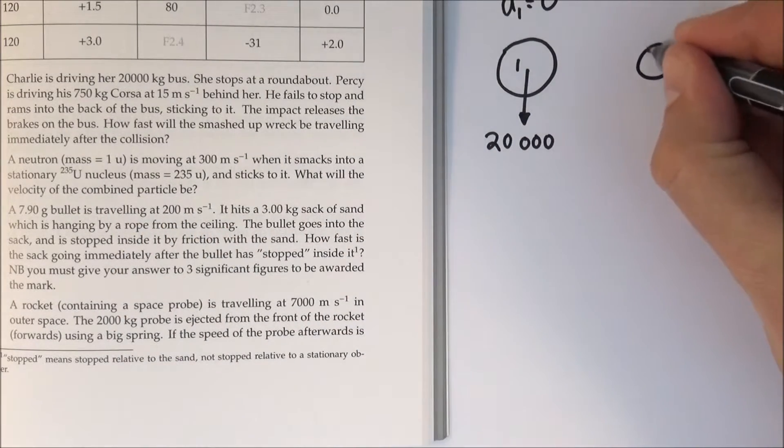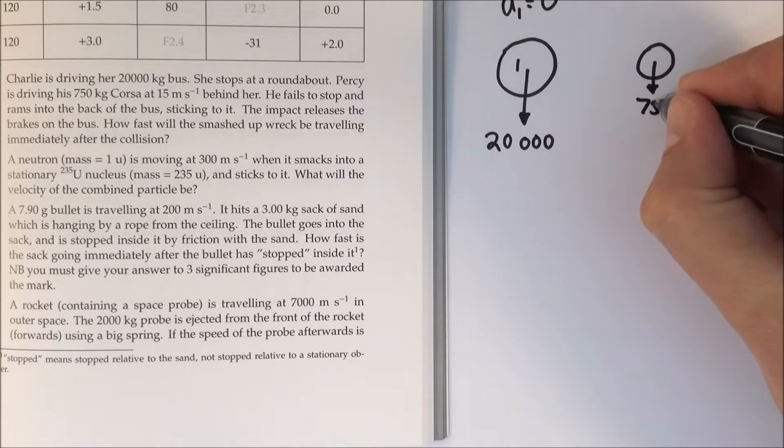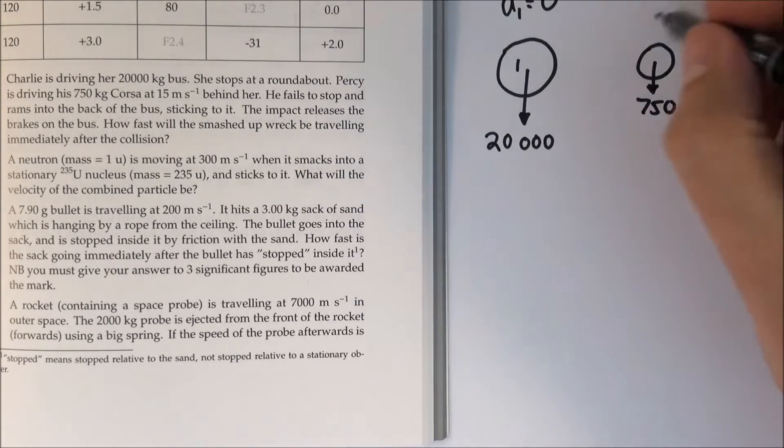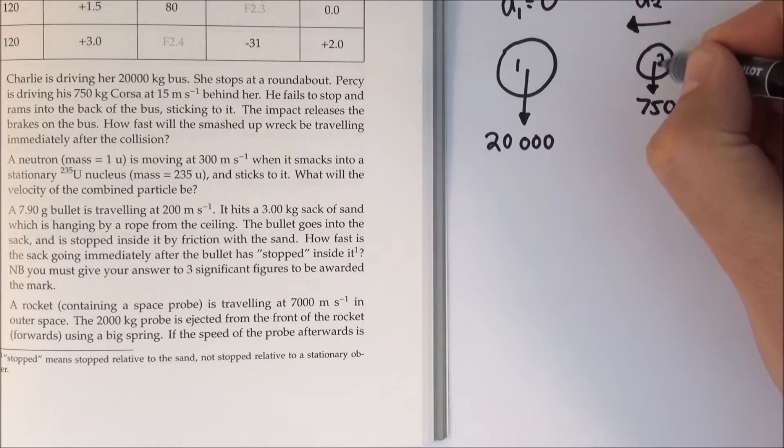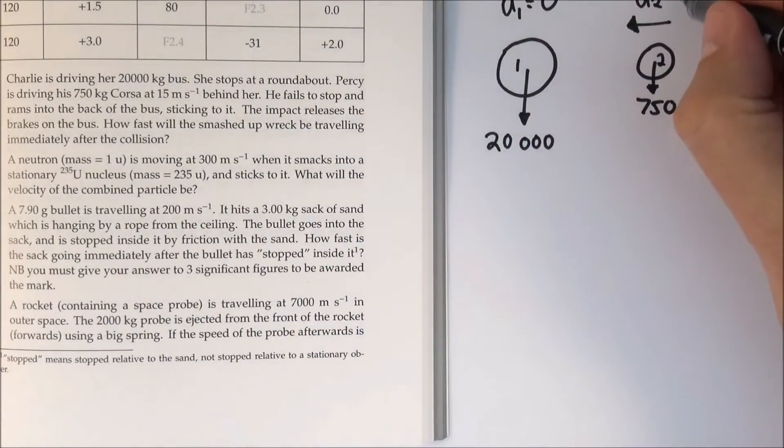The car I'm going to draw as a smaller circle to show that it has less mass, and that's 750. This is traveling along at U2 because I'm going to call this object two, and it says they're traveling at 15 meters per second.